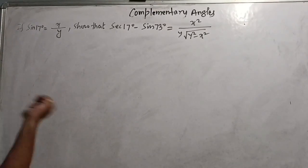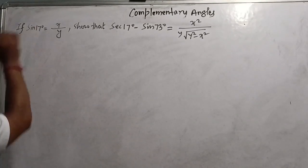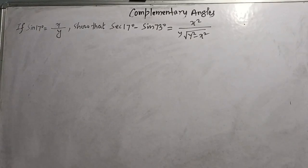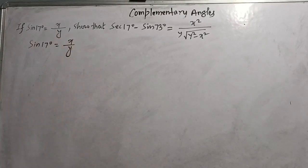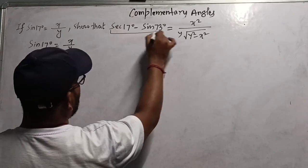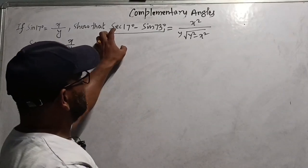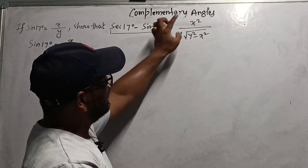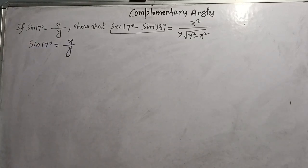Now the next question, which is also very important and has come many times in the mathematics board examination. Here we have sin17° = x/y, and we are supposed to prove that sec17° - sin73° = x²/(y√(y² - x²)).